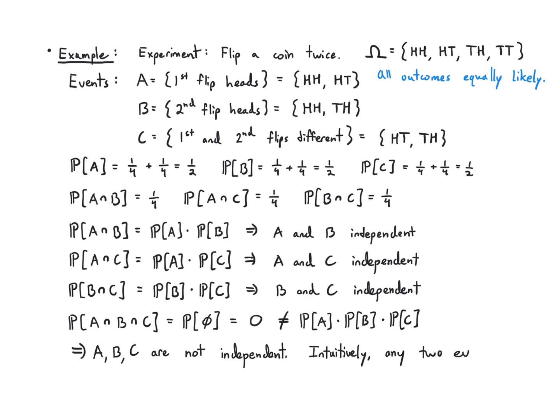Intuitively, any two events can be used to improve our prediction of the third. For example, knowing the first flip is heads alone tells you nothing about the second flip. But knowing the first flip is heads and the second flip is heads tells you the first and second flips are not different — so together A and B reveal information about C.